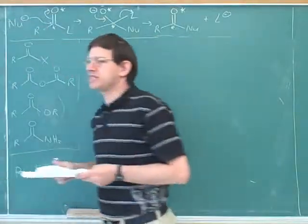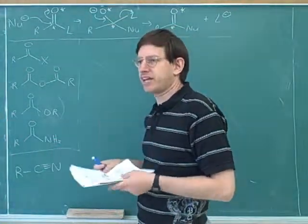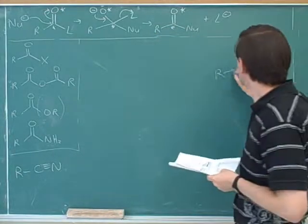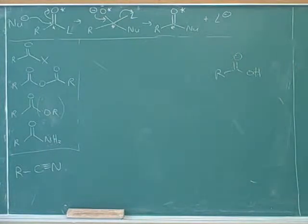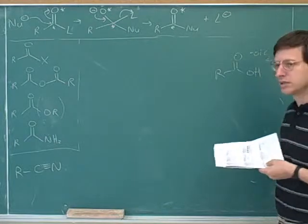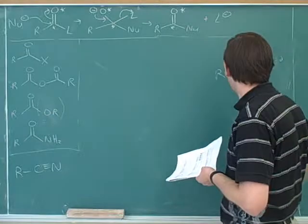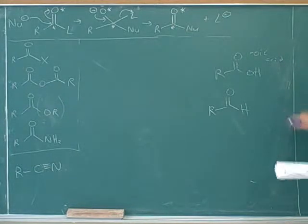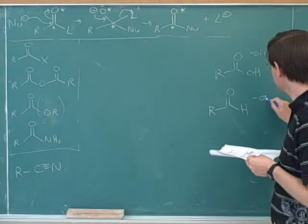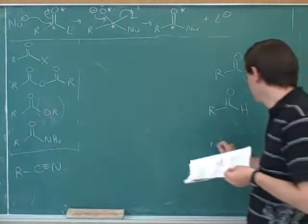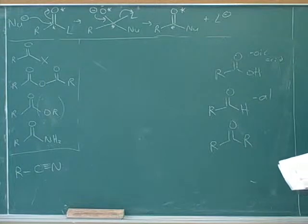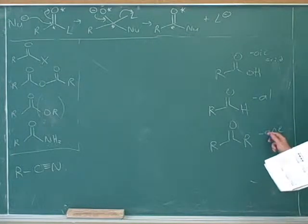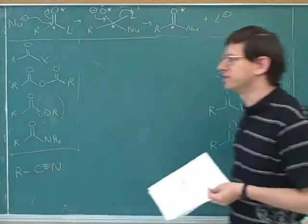We didn't talk about how to name carboxylic acids because you already reviewed that in one of the videos. Do you remember what the suffix is for carboxylic acids? Oic acid — that's right: oic acid. You might have butanoic acid or propanoic acid. What's the suffix for aldehydes? Is it al? Good, yeah — that comes from the name aldehyde, it just ends in A-L. And what's the suffix for ketones? O-ne. That comes from the name ketone, it ends in -one. So that's quite a bit of nomenclature you've gone over, and that's probably going to be coming up on the next test.